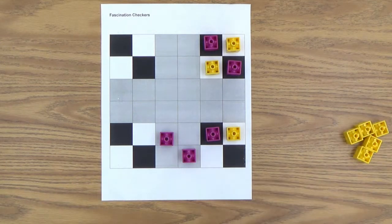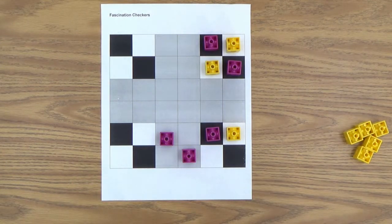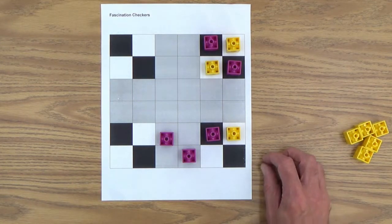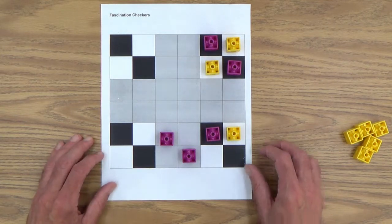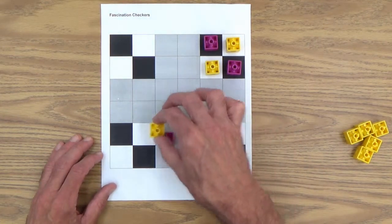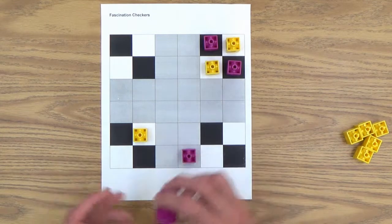And now it's yellow's turn. Let's see. Oh, and look, yellow has a double jump. Boom. Boom. Takes two purples.